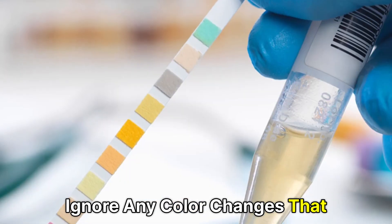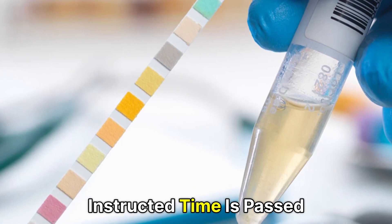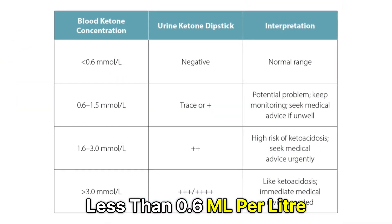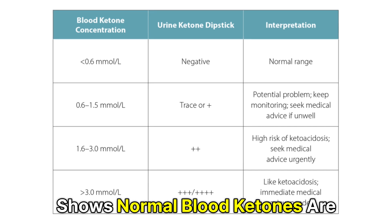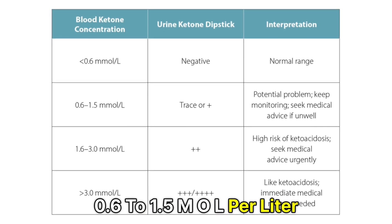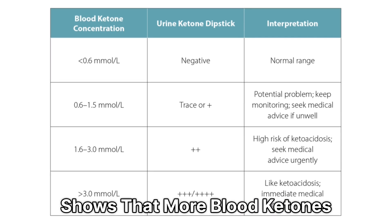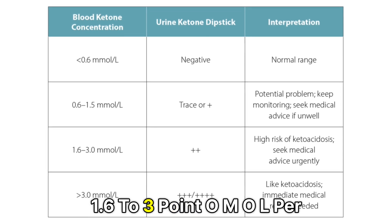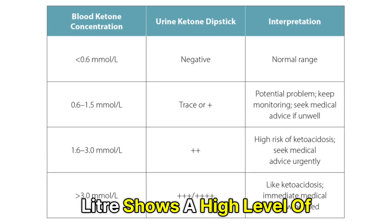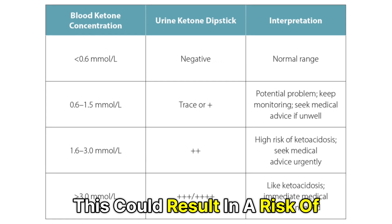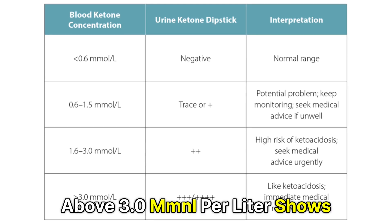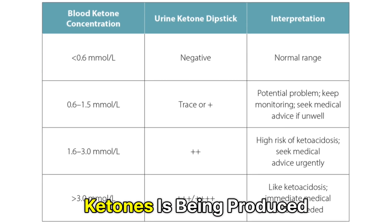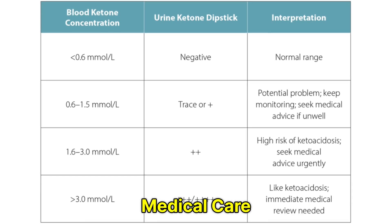Ignore any color changes that may take place after the instructed time has passed. What do different ketone results represent? Less than 0.6 mmol/L shows normal blood ketones are being produced. 0.6 to 1.5 mmol/L shows that more blood ketones are being produced than normal. 1.6 to 3.0 mmol/L shows a high level of blood ketones — this could result in a risk of ketoacidosis. Above 3.0 mmol/L shows a dangerous level of blood ketones is being produced, and this level requires immediate medical care.